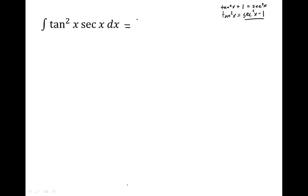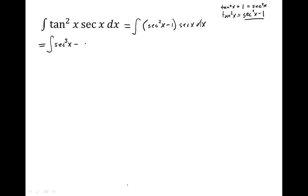So going back to our integral, we have the integral of tangent squared x, which we can rewrite as the integral of secant squared x minus 1, and then that quantity times the original secant x dx. This is then equal to, if we foil that out, the secant cubed of x minus the secant x dx.